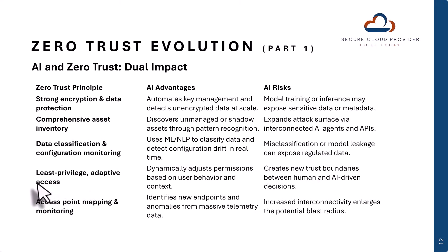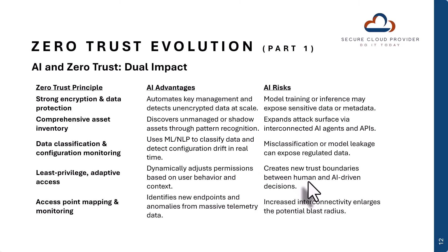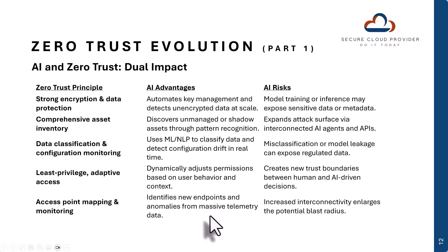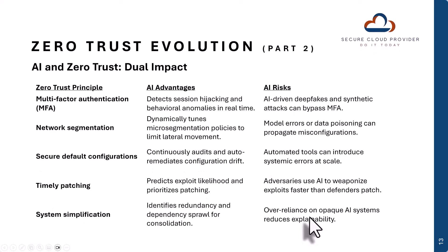With regard to least-privileged adaptive access, which is very important for zero trust, AI can dynamically adjust permissions based on user behavior and context, but in doing so it also creates new trust boundaries between human and AI-driven decisions — how much decision-making power do you want the AI to have versus how much do you want to retain? For access point mapping and monitoring, AI can identify new endpoints and anomalies from massive telemetry data, but it also presents increased interconnectivity, which can enlarge the potential blast radius.